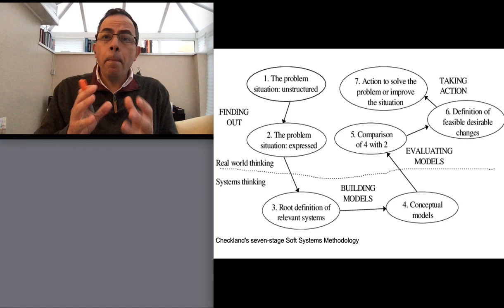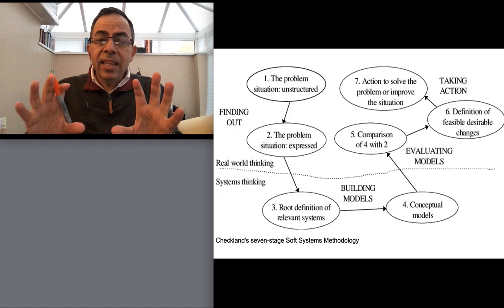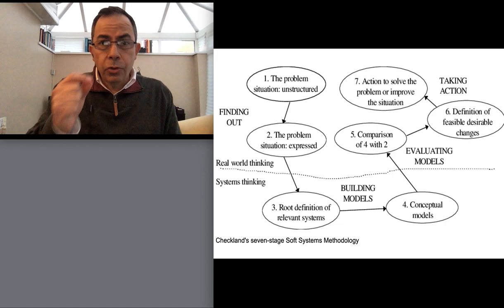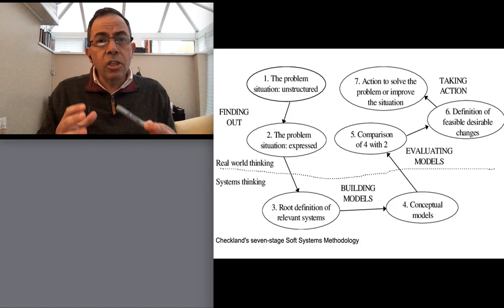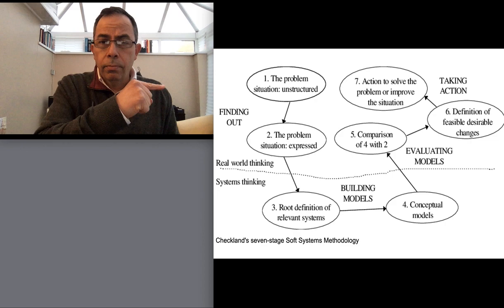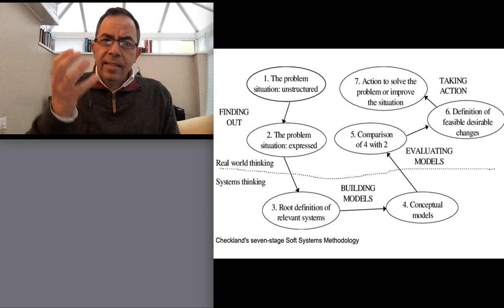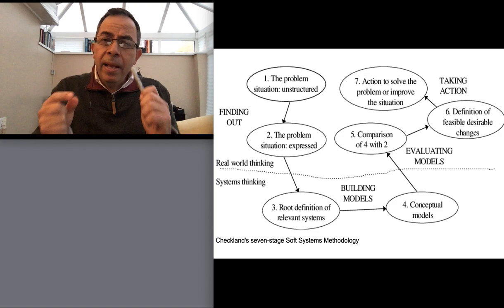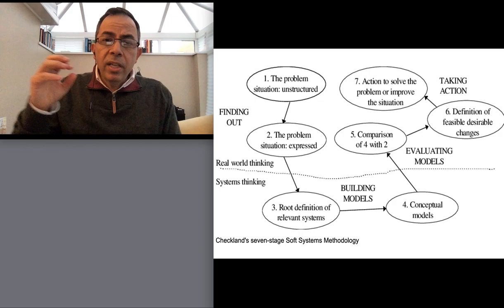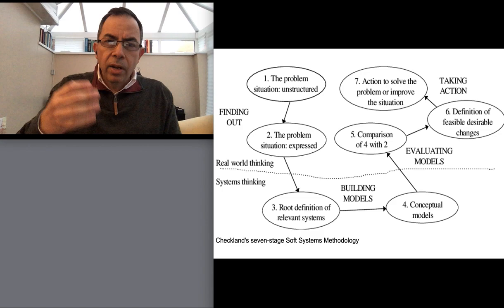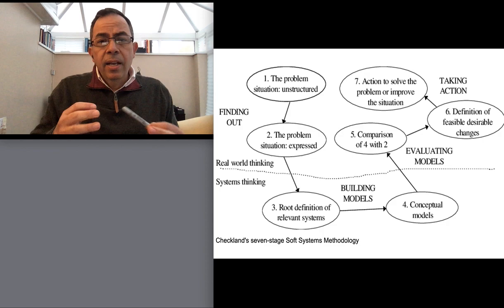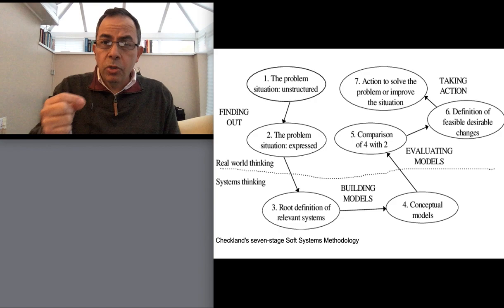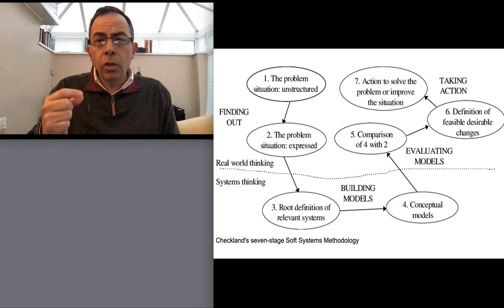By making the comparison between what we have and what it should or ought to be, we determine paths or actions for improvement. In a sense, this is also how a doctor operates. When they receive a patient, all the symptoms are part of the real world. The doctor relates that information to what a healthy patient would look like, starts to identify a path, determines what the patient is suffering from, and eventually prescribes treatment.